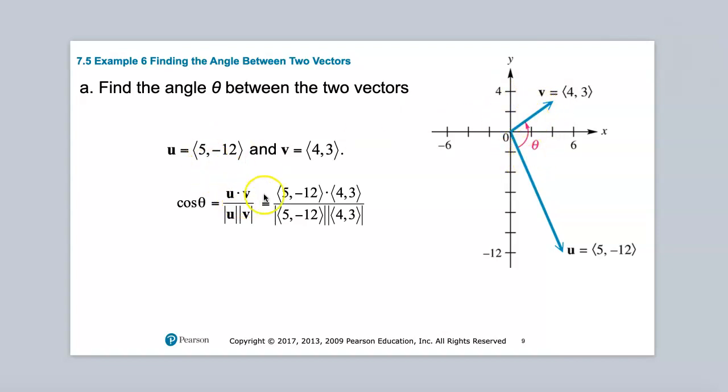So if you take the dot product of these two vectors, which would be 5 times 4 plus negative 12 times 3, and then you divide by the magnitudes of each of these, and this is a 5,12,13 triangle and a 3,4,5 triangle. So that would be 13 times 5, which is 65.